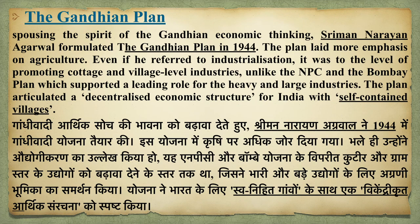The next important plan is the Gandhian plan, which was given by Shreeman Narayan Agarwal. This plan was formulated in 1944. The main emphasis of the plan was on agriculture. While the Bombay plan and NPC focused on heavy and large-scale industries, the Gandhian plan had a different emphasis — focusing on agricultural and village-level industries rather than large-scale industrialization.